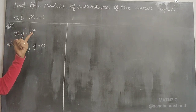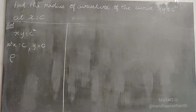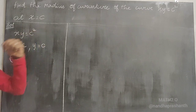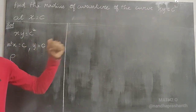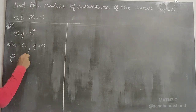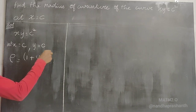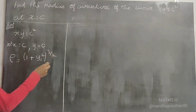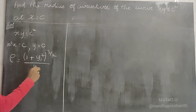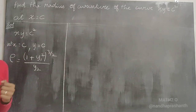We find the radius of curvature for the curve xy = c² using the Cartesian formula. The Cartesian formula is: ρ = (1 + y₁²)^(3/2) divided by y₂, where y₁ is the first derivative and y₂ is the second derivative of the curve.